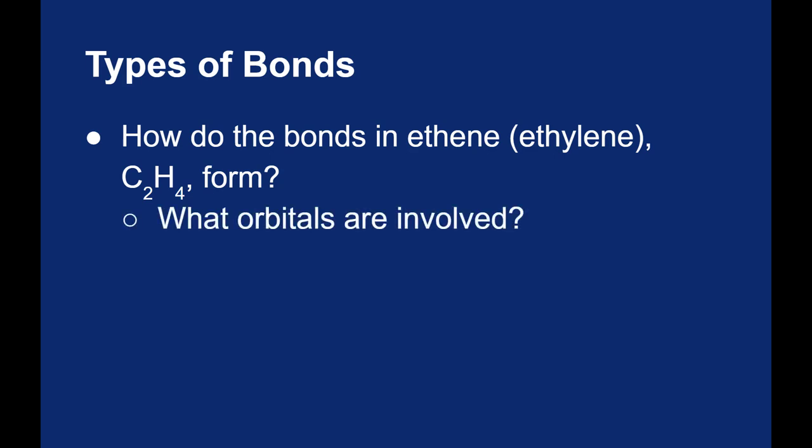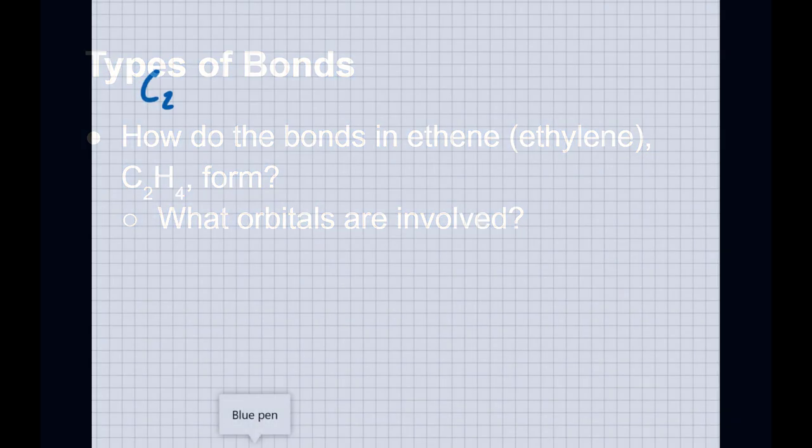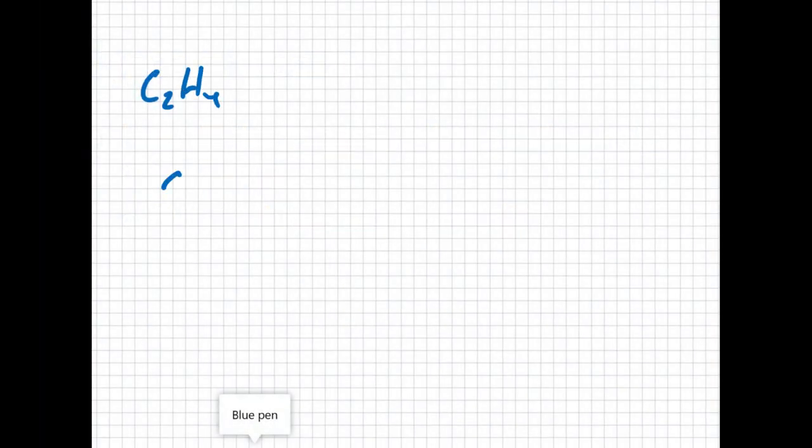In particular, I want to figure out what orbitals are involved in the bonding of ethene. C2H4 has two carbons bonded to each other, and then two hydrogens bonded to each of the carbons. To satisfy the octet rule, there is a double bond between the two carbons.